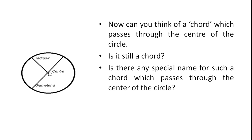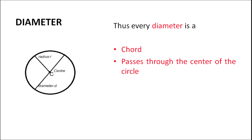Can you think of a chord which passes through the center of the circle? A chord is obtained whenever we connect any two points on the circle. So is it possible to draw a chord that passes through the center? Can it still be considered a chord? If so, is there any special name for such a chord? The new term is diameter. Every diameter is a chord which passes through the center of the circle. It is important to remember that a chord can pass through the center, but we give it the special name: diameter.